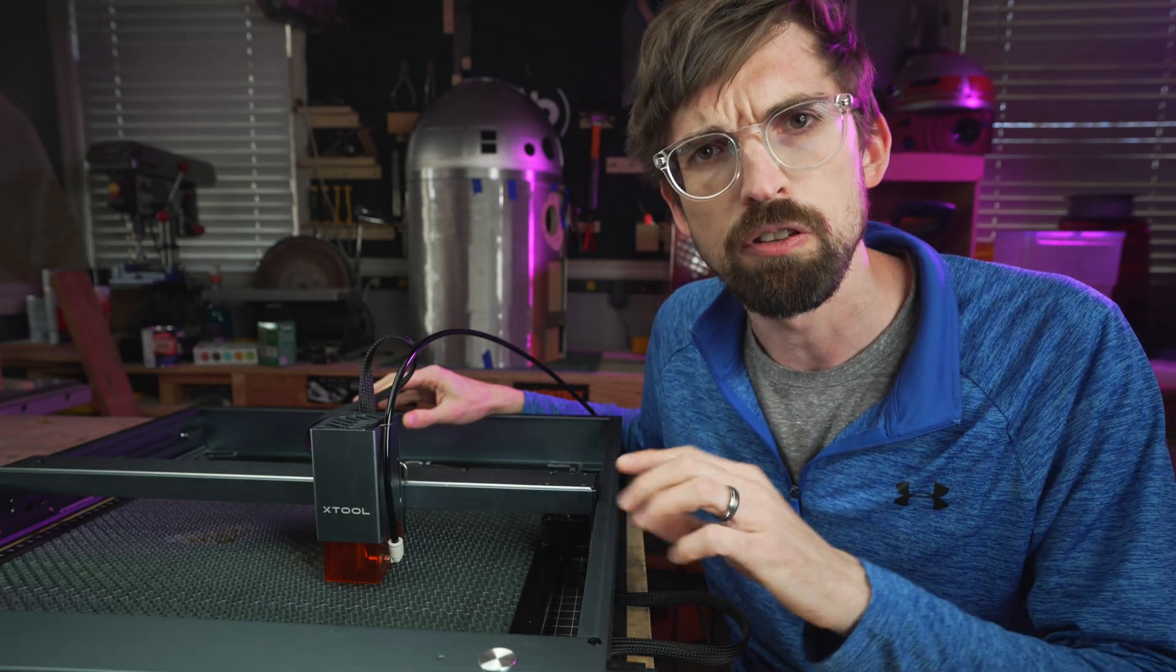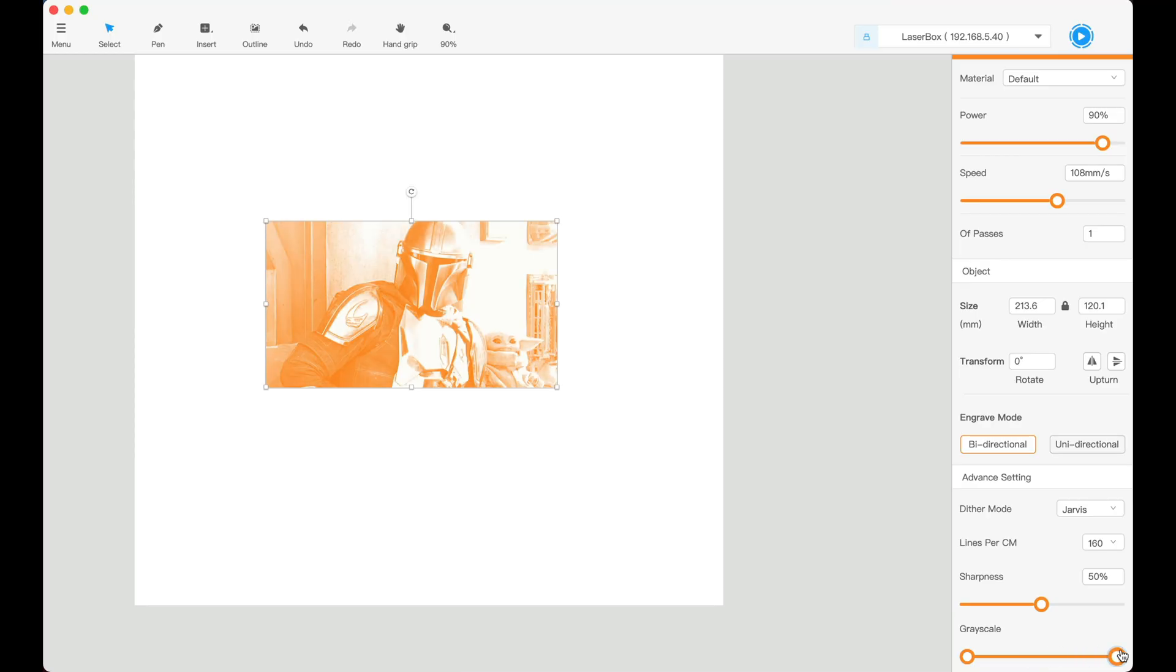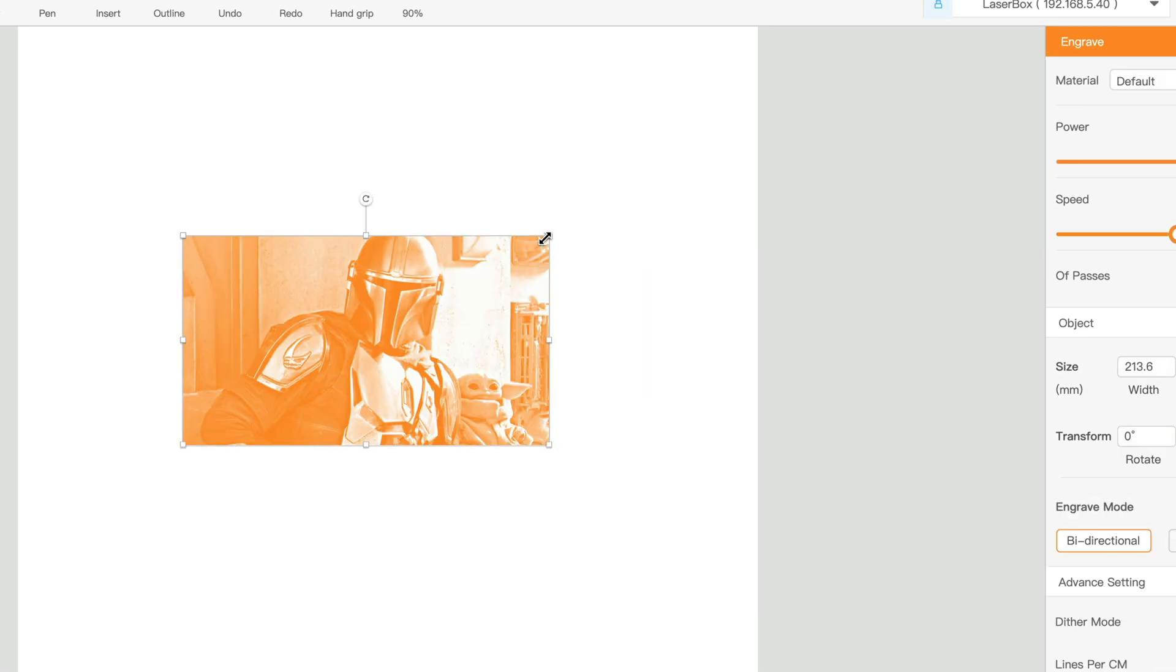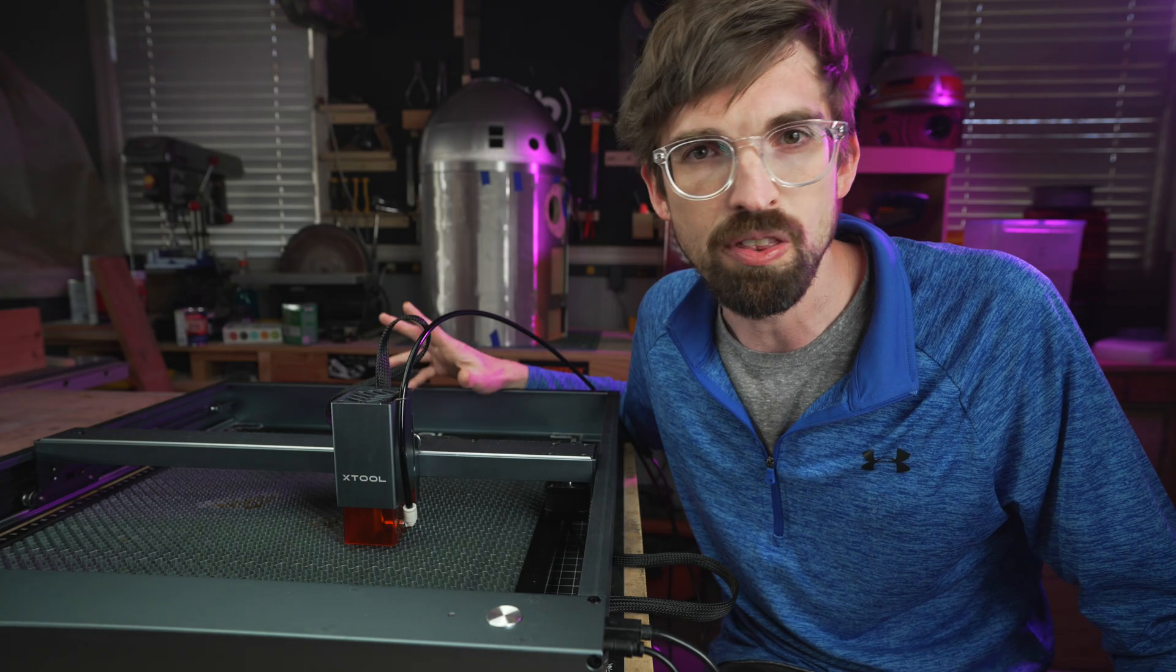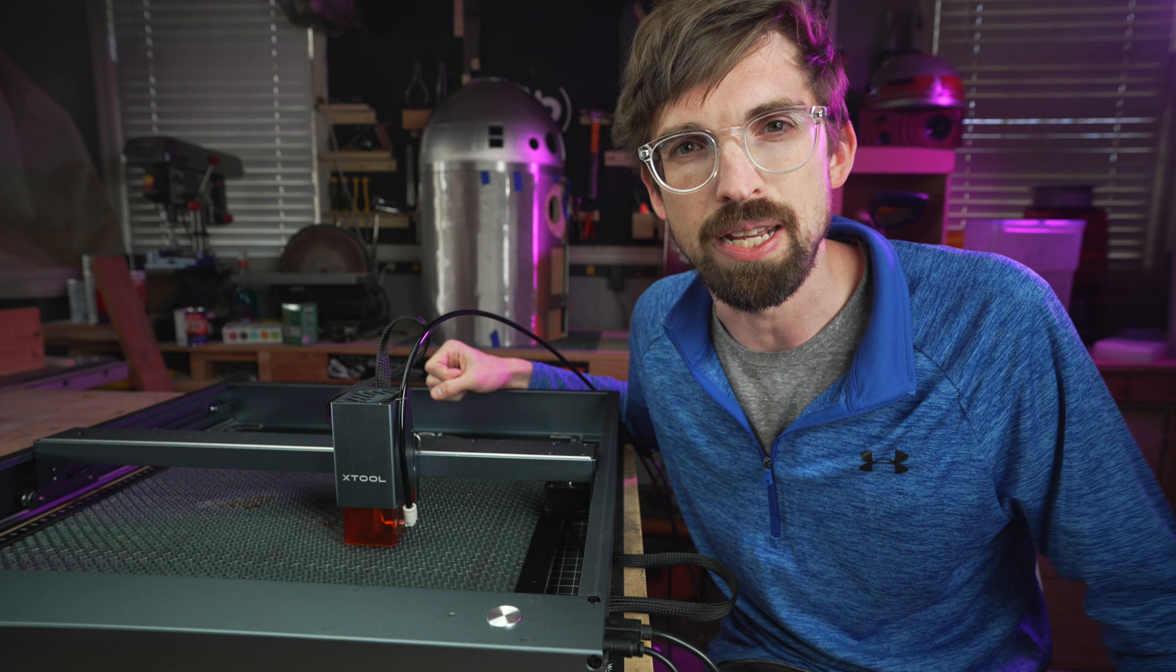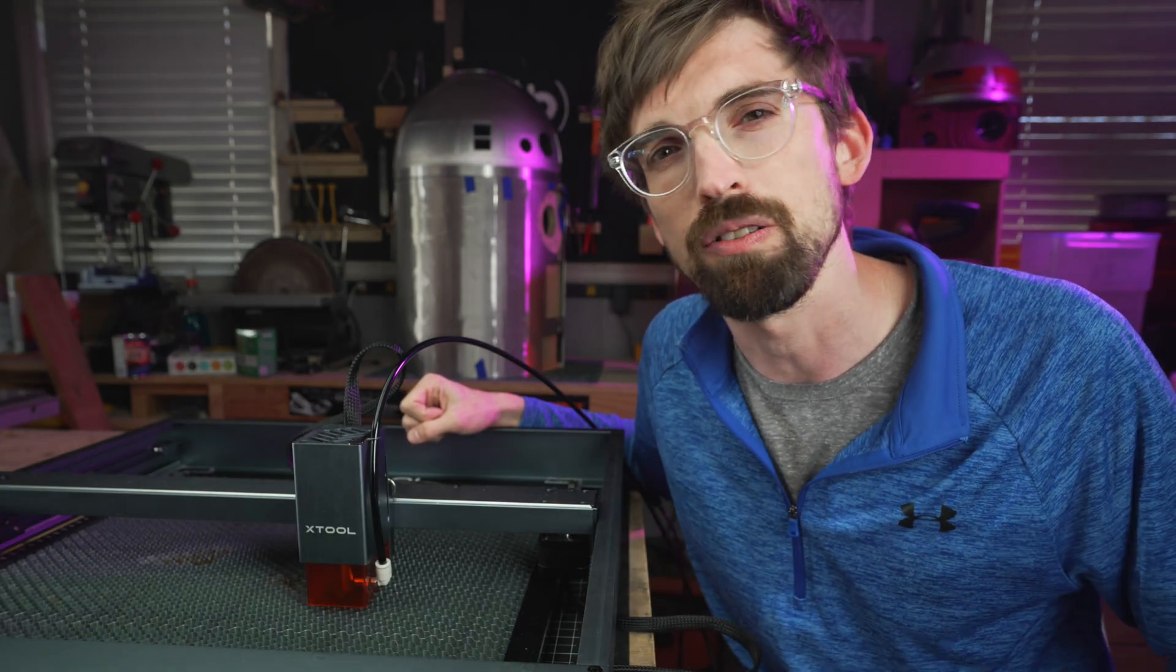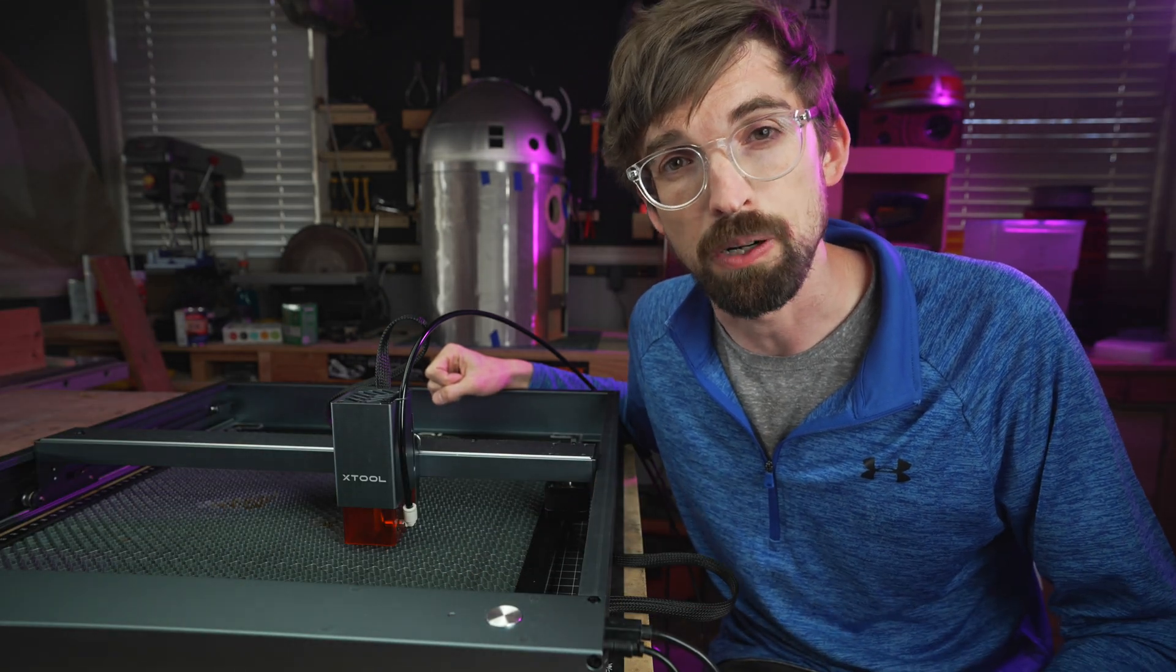But there were a few drawbacks to this machine when I first reviewed it, and the biggest was the software. So it comes with its own MakeBlock basic software, which is a scaled down version of the normal MakeBlock software that they use to power their bigger CO2 machine. And the software's fine, it's pretty easy to use, and you're going to be able to do most of the things that you need to do. But with any of my lasers, I really like to use Lightburn. You've heard me talk about Lightburn a ton in the past, and the fact this didn't support it was one of my biggest drawbacks of this machine. But about a month after that, they actually announced that they were going to support Lightburn.